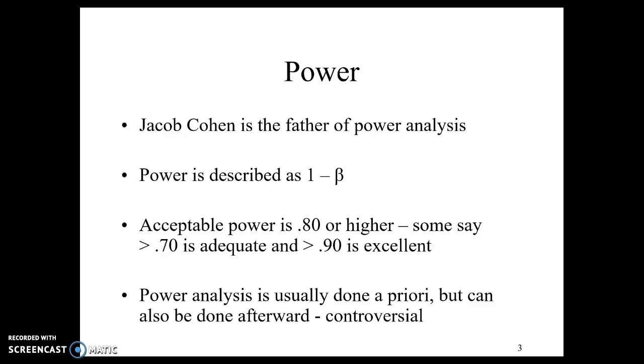Jacob Cohen is the father of power analysis. Power is described as 1 minus beta. This is a different beta than regression, of course. Acceptable power is considered 0.8, but 0.7 is really adequate, especially in education where we need more wiggle room. If you have a power of 0.9, congratulations, that's excellent.